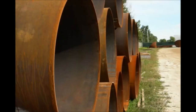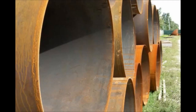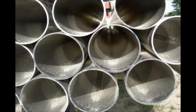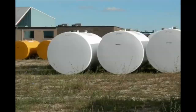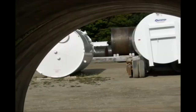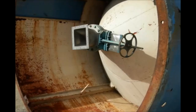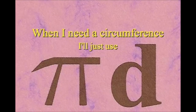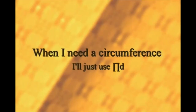Here is a circle, it knows how to get around. It has a radius from center to rim. And its diameter's a line that goes from side to side while passing through the center, now isn't that simple. Pi r squared sounds like area to me, when I need a circumference, I'll just use pi d.